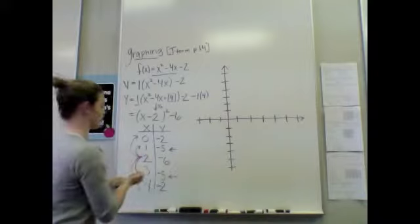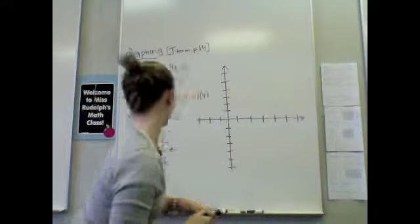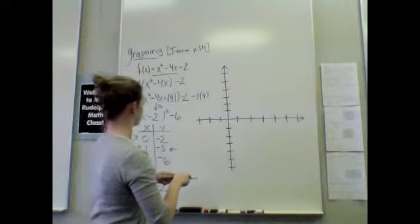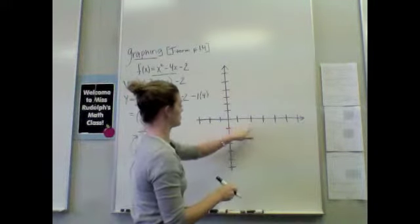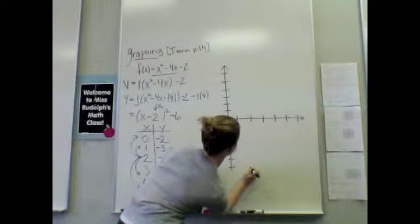Let's use my black marker here. Let's plot our vertex first. So, 2, 1, 2, 3, 4, 5, 6. Here is approximately my vertex.